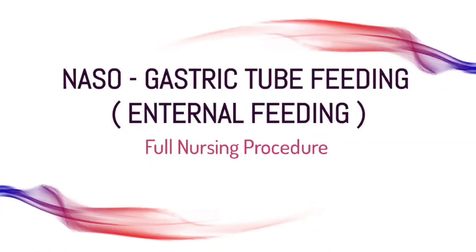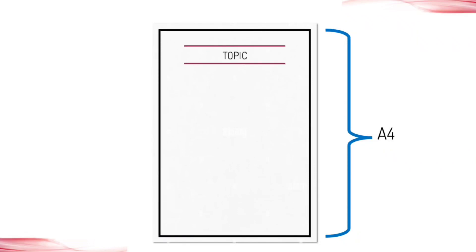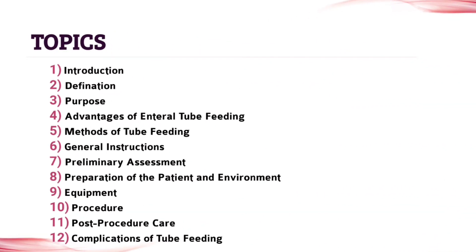Hello nursing students. In this video I am giving you a full assignment of nasogastric tube feeding. This is a picture of this procedure in which a nurse is giving the NG tube feeding procedure. Firstly, you need A4 size paper — make sure to put a boundary on your paper, write the topic on the upper side of each page, and write points under each topic. These all topics are needed for your assignment.